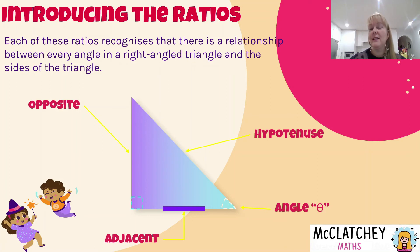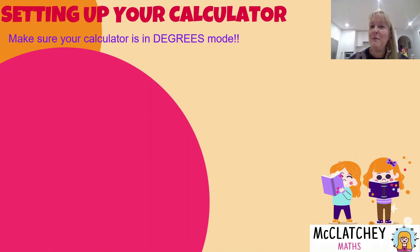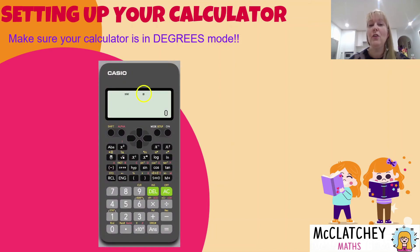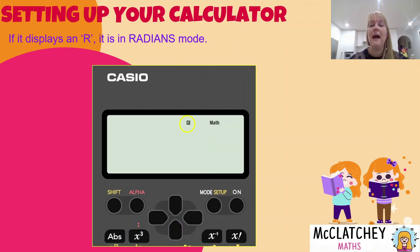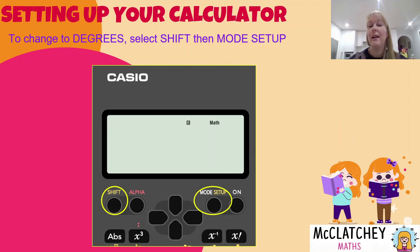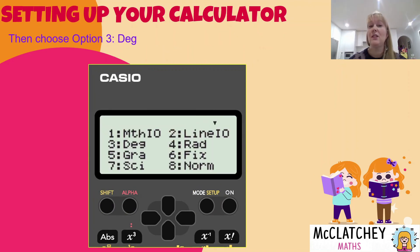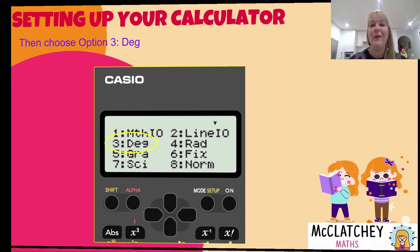Each of these ratios recognizes the special relationship between every angle in our right-angle triangle and the sides of the triangle — that's why it's really important to set up the opposite side properly. When using our calculator, we set it up in degrees mode. On this Casio calculator, you can see a tiny little D in the viewing window at the top, which tells you it's in degrees mode. If it's in radians mode by accident, it'll give you quite different answers. For junior trig we use degrees mode. If you see a little R in the viewing window, select the shift button, then click the mode setup button, choose option 3 for degrees, and you'll have it ready to use for all your calculations.